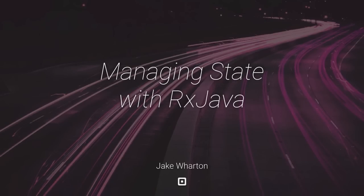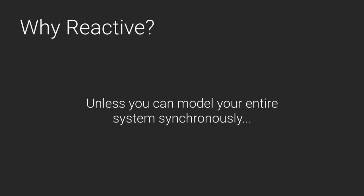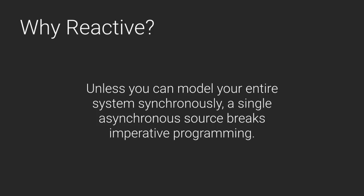So once you've initially invested in RxJava, how you take it to the next level and use it in a much more idiomatic way. I'm going to postulate that unless your entire system can be modeled in a synchronous fashion, a single asynchronous source is going to break imperative programming. By break, I don't mean it becomes impossible — it's just that the amount of complexity compounds such that it becomes unmaintainable when you get into this "state soup." And that's exactly what we're going to look at trying to solve here.